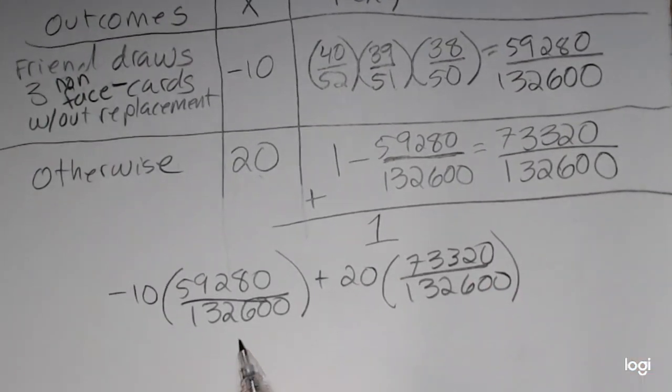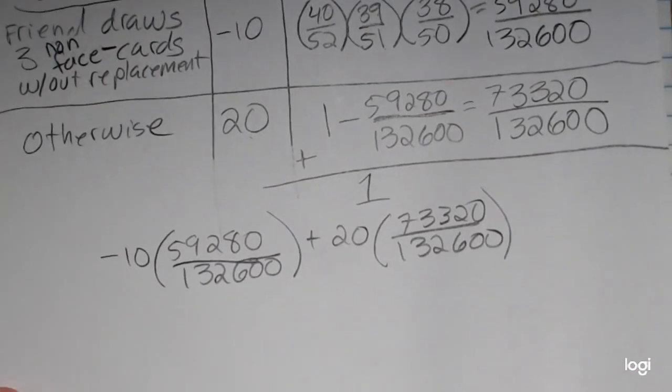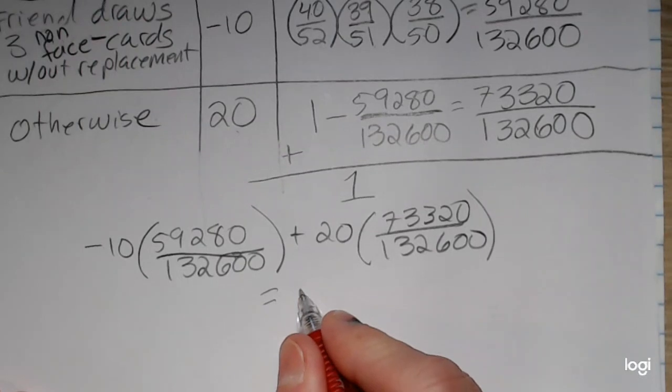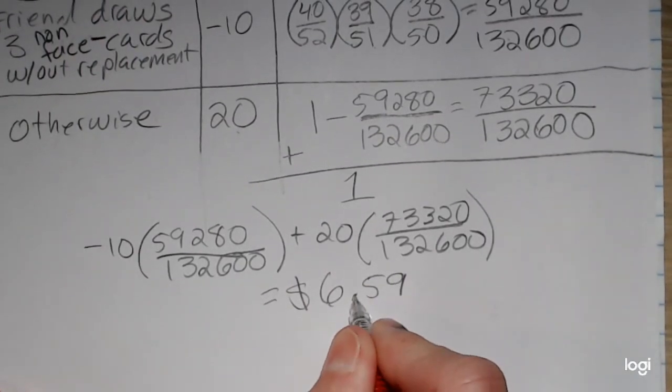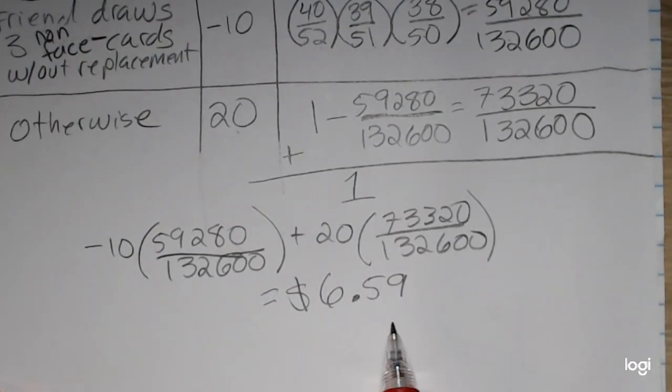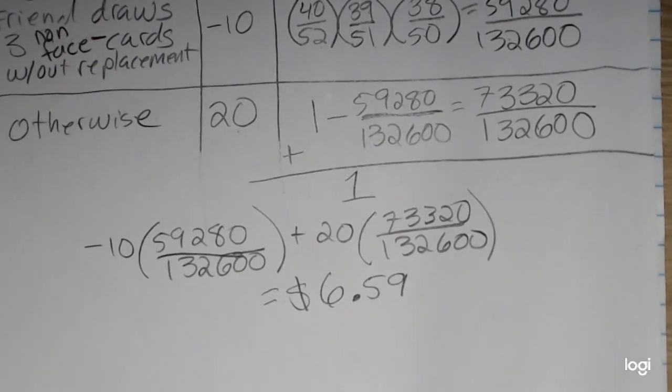Using my calculator and rounding to the nearest cent, because we're talking about winnings and dollars, I get positive $6.59. So because of this expected value is positive for the player and it's somewhat high for a game of chance, this would definitely be a bet you would want to take with your friend.